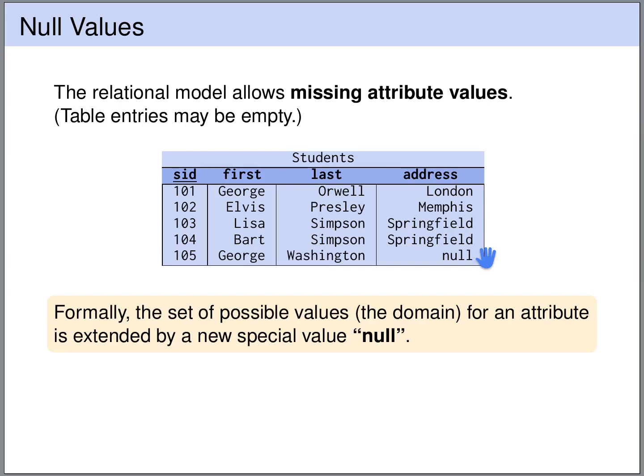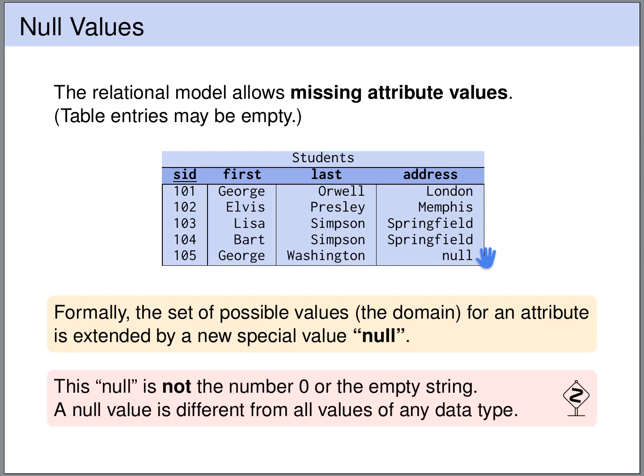Formally, the set of possible values of the domain is extended by a new special value NULL. So it's important to understand that NULL is neither the number 0 nor the empty string. A NULL value is different from all the values of any data type.